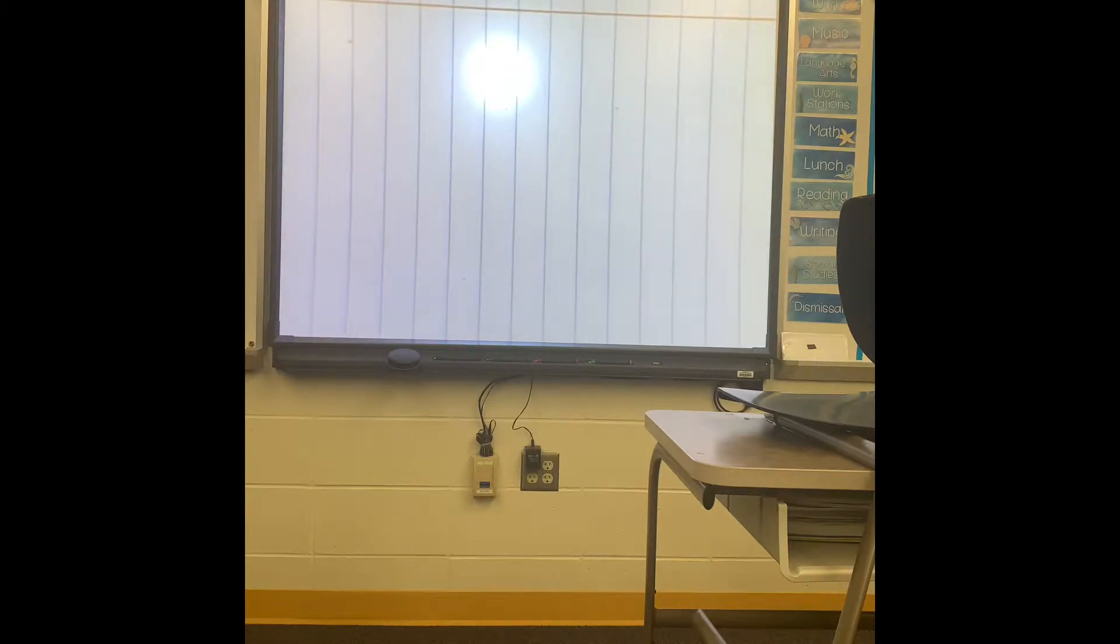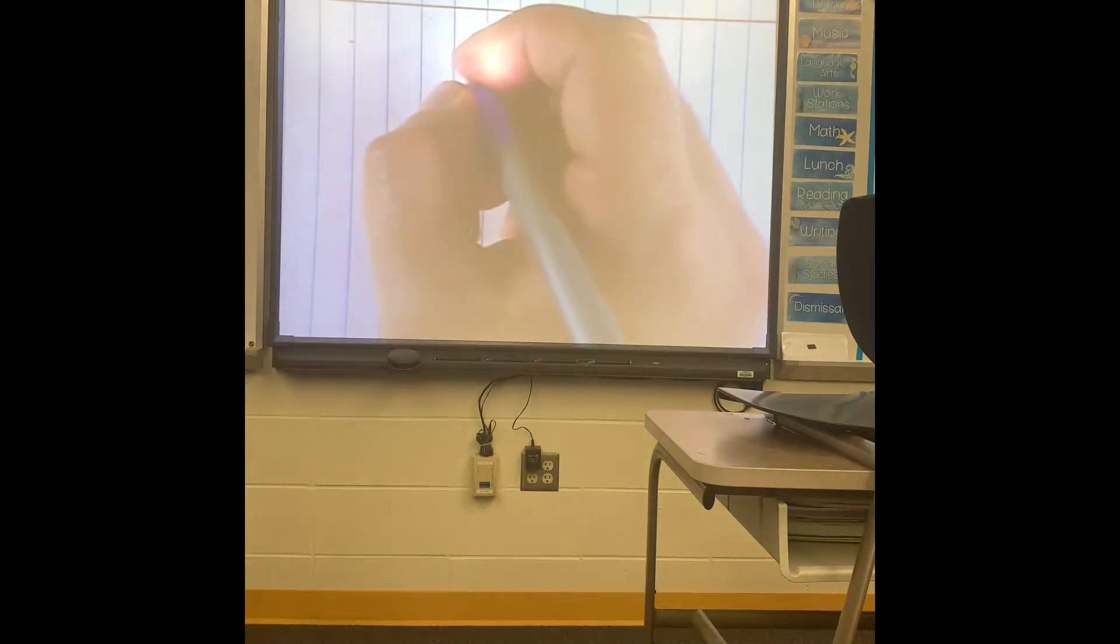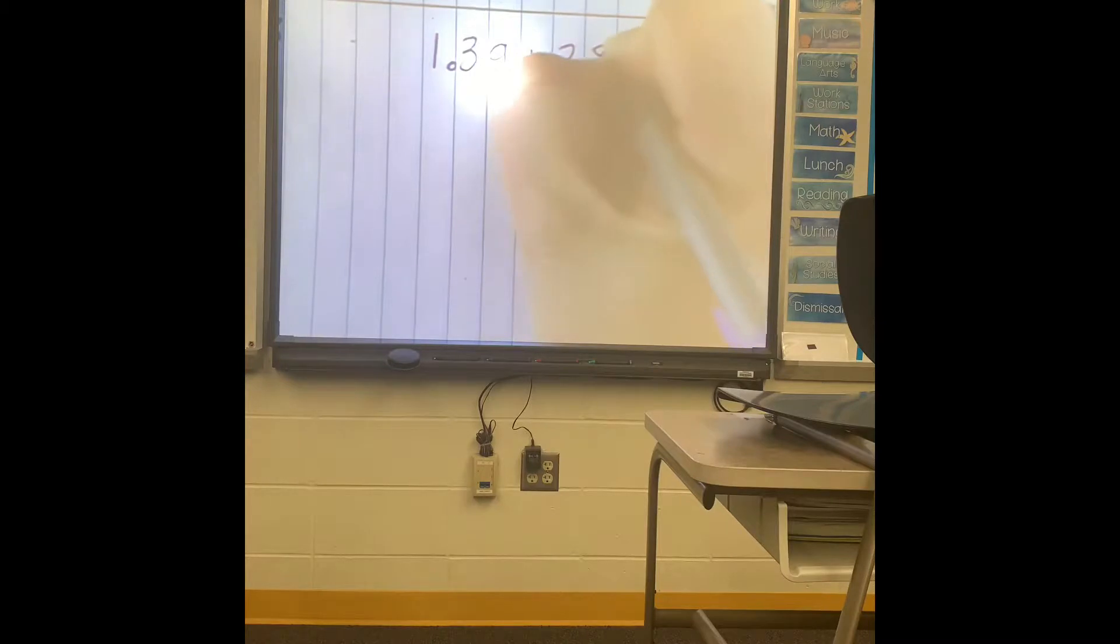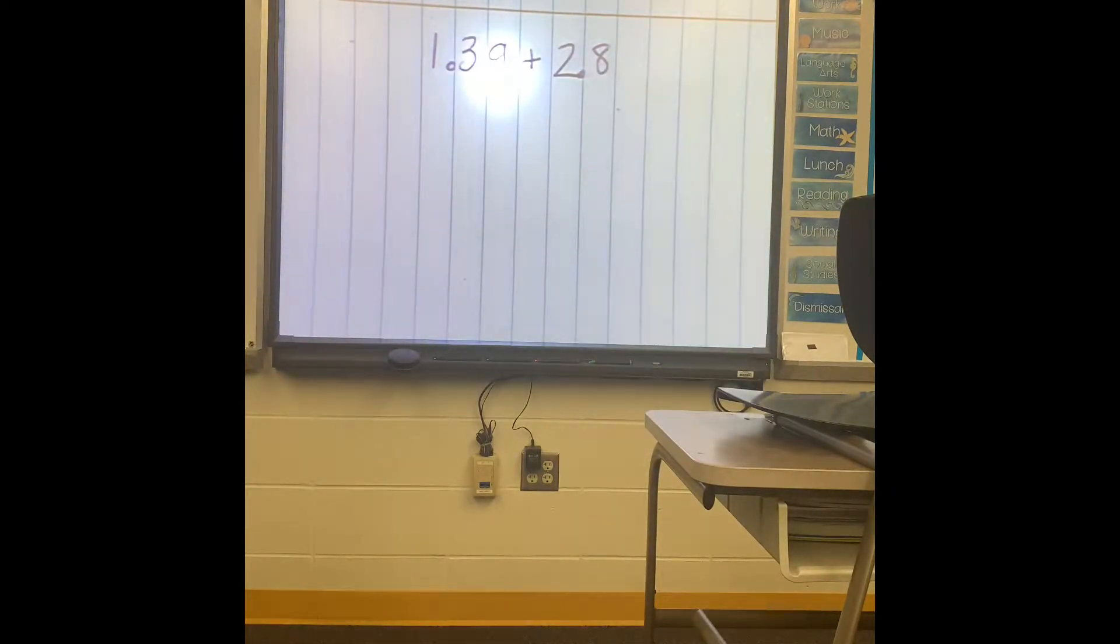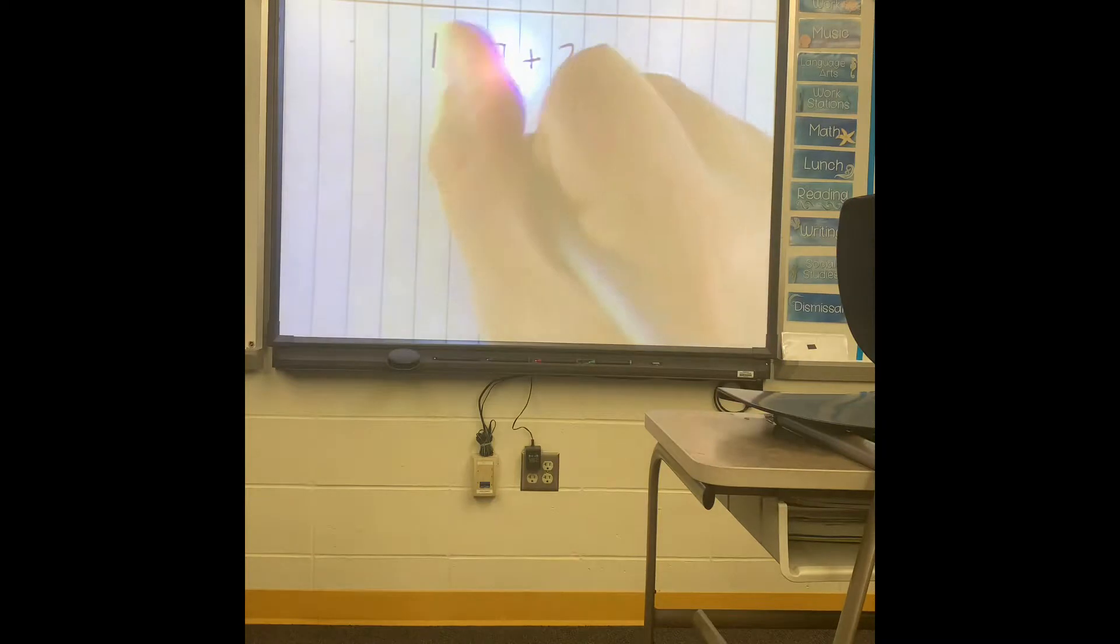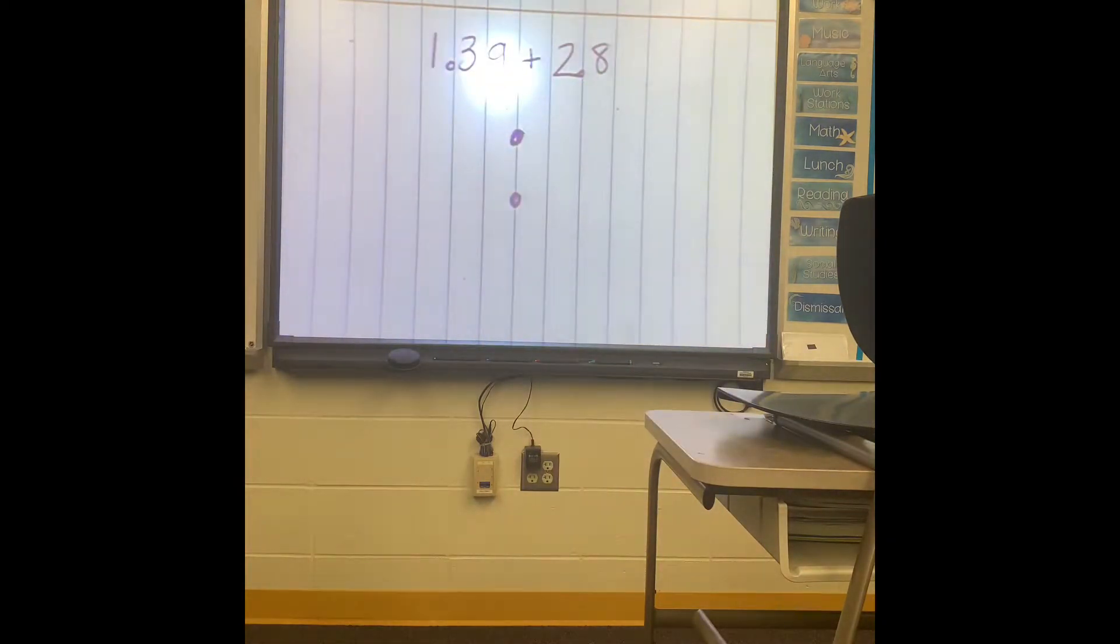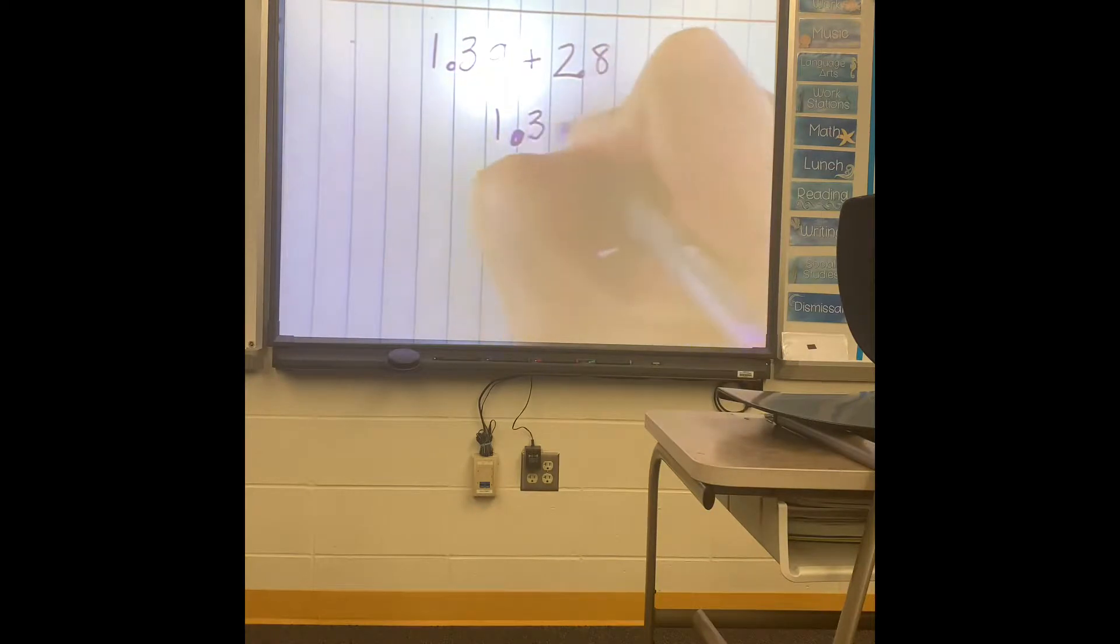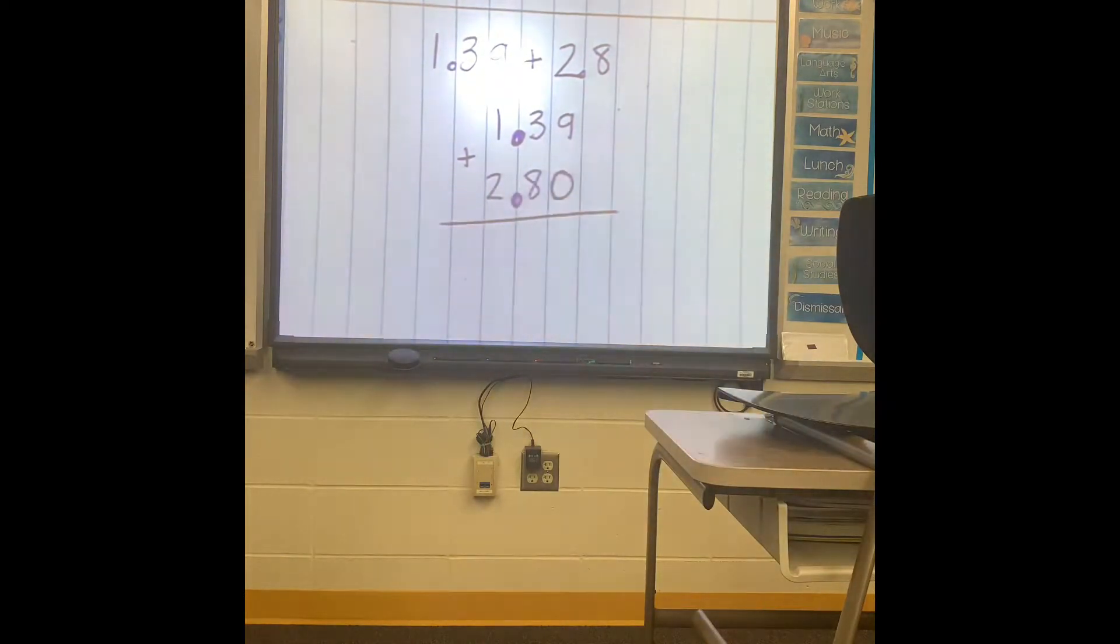That one was pretty easy. They can get a little bit trickier if we have 1.39 plus 2.8. Now this is where you will see me have to fill in a zero. So the very first thing, put those decimals down. Now put your numbers in the correct spot.